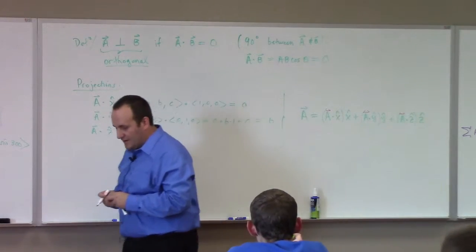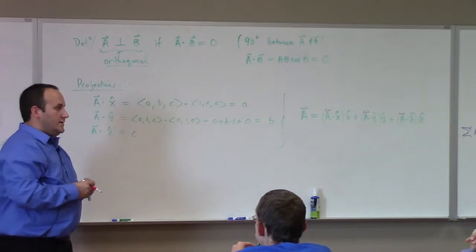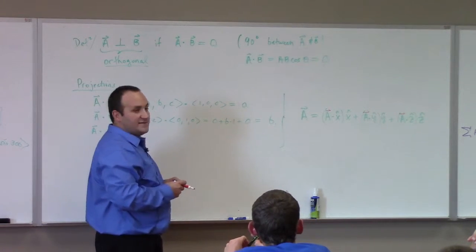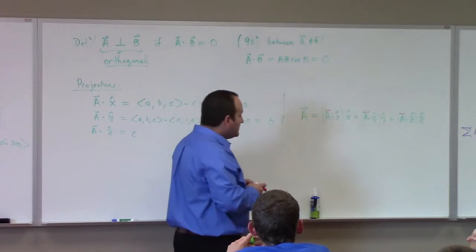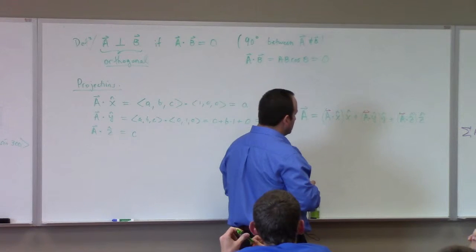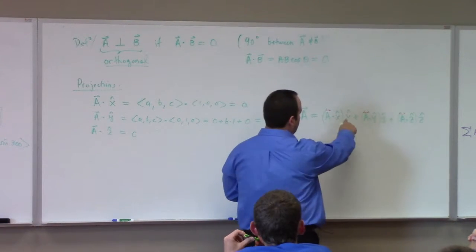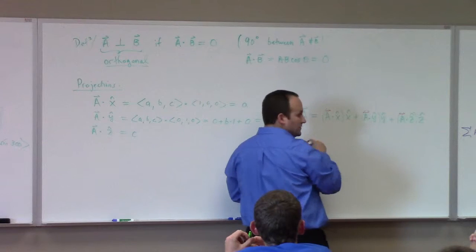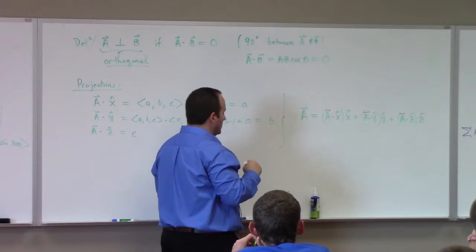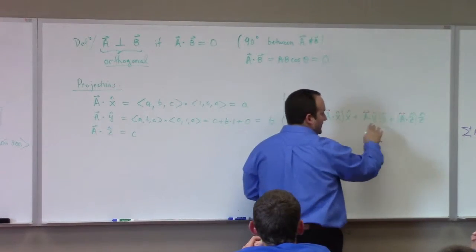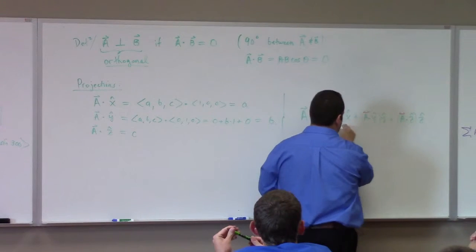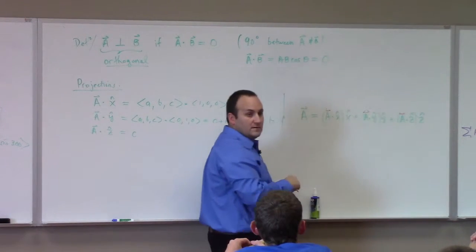The things in parentheses are dot products, though. Oh, this? No, that's just scalar multiplication. Oh, right. No, no. This is a vector is equal to another vector. But, the dot products are giving you the components of the scalar components of the vector.